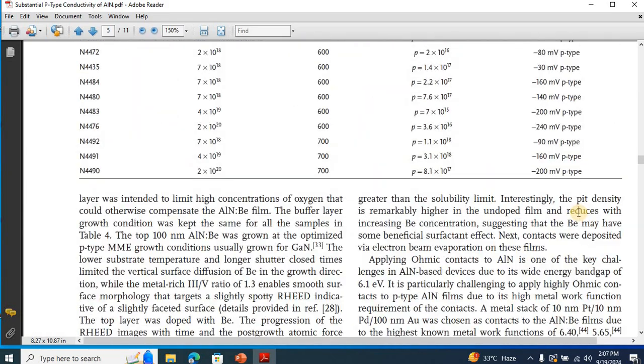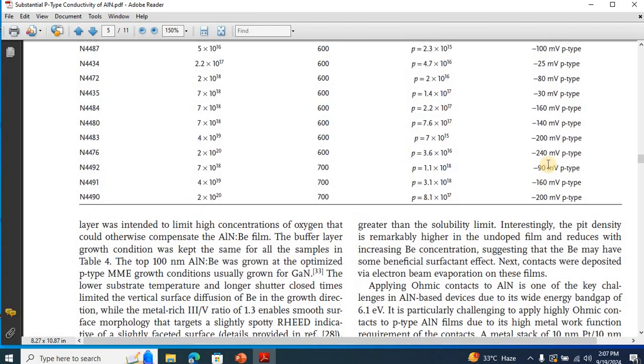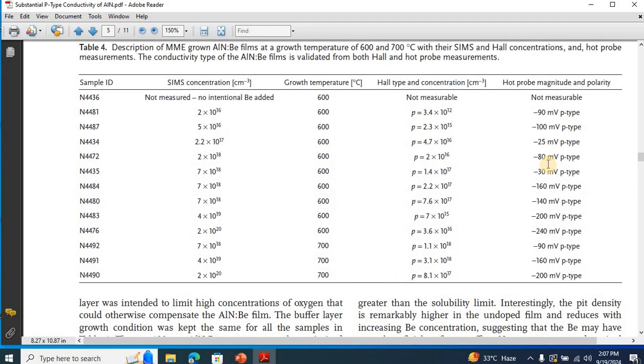Similarly, I performed another comprehensive study of beryllium-doped aluminum nitride films. And I performed hot probe measurements for a lot of these samples and I found out negative potential for these samples, minus 90 millivolts, minus 100, etc., different values for different samples. And the negative potential over here for these samples indicates that this is a P-type semiconductor. And these results are also validated by Hall effect measurements which showed P-type conductivity for these beryllium-doped aluminum nitride films.